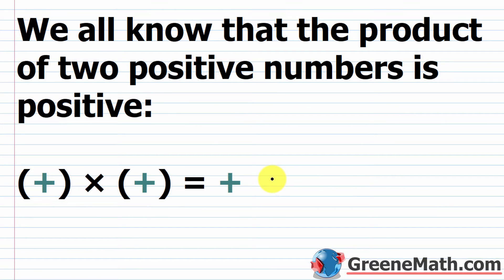At this point in the course, we should know how to multiply whole numbers together, and we know that unless we have a factor of zero, if we multiply two whole numbers together, we're going to get a positive product. The product of two positive numbers is positive — a positive times a positive will give us a positive.